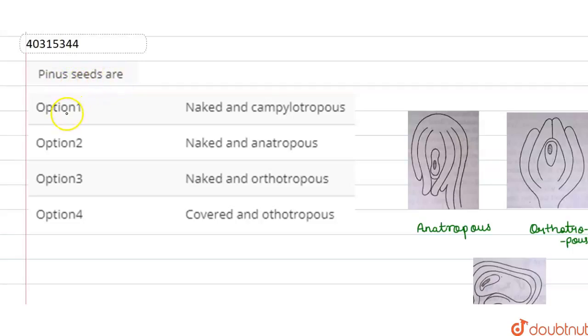Question is, Pinus seeds are option 1, naked and campylo-tropes, option 2, naked and anitropes, option 3, naked and orthotropes, and option 4, covered and orthotropes.